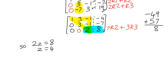And then, going up to row 2, we've got 3y minus z equals negative 7. If we know z is 4, 3y minus 4 equals negative 7. If you add 4 on to both sides, we get 3y equals negative 3. So, y equals negative 1.